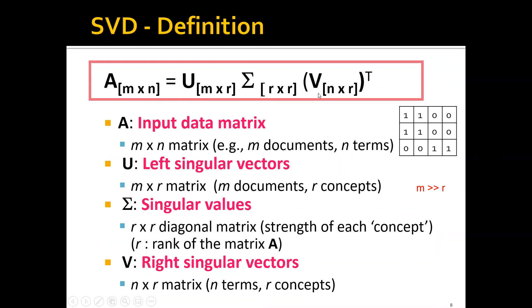Let's say that the input matrix is of size n by n. For example, it can represent n documents with n terms or n words in the vocabulary. As a concrete example, it can be a three by four matrix representing three documents, where the first document has word one and word two, the second document is the same as the first, and the third document has word three and word four.